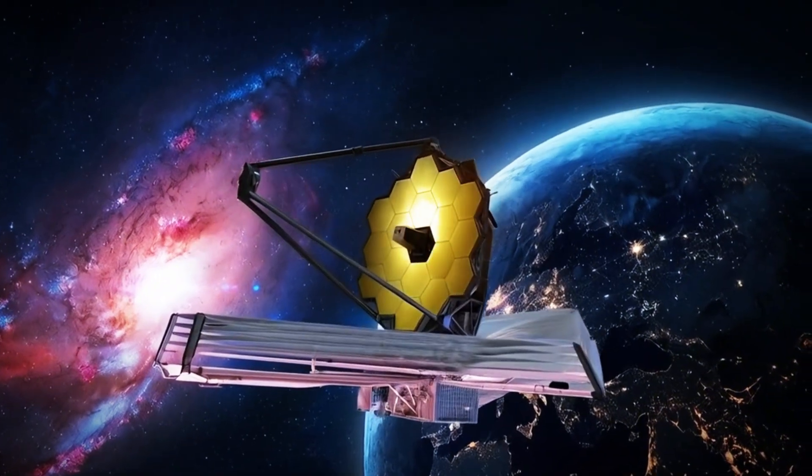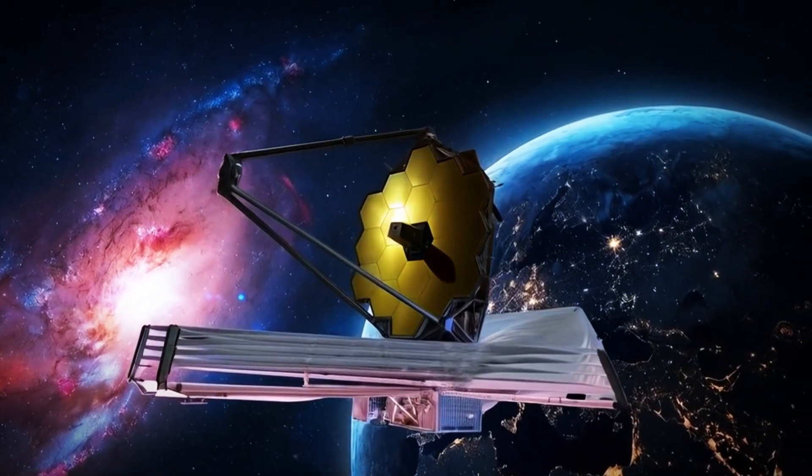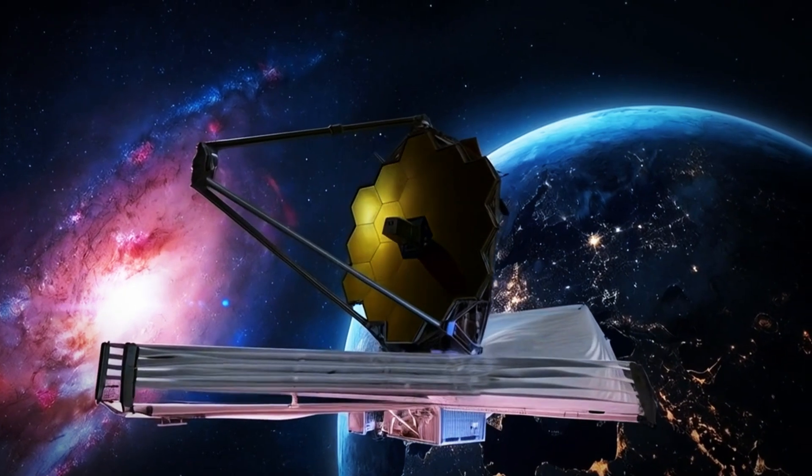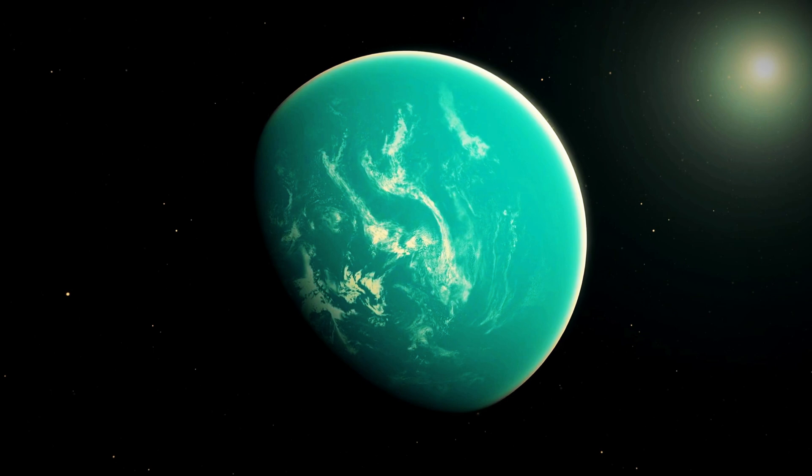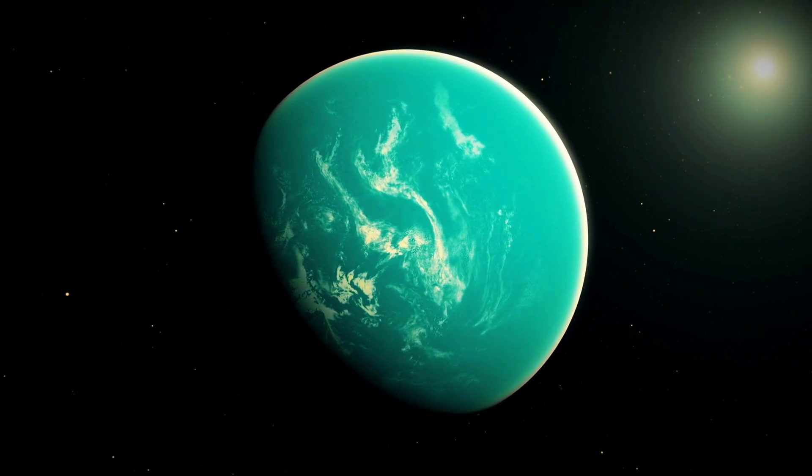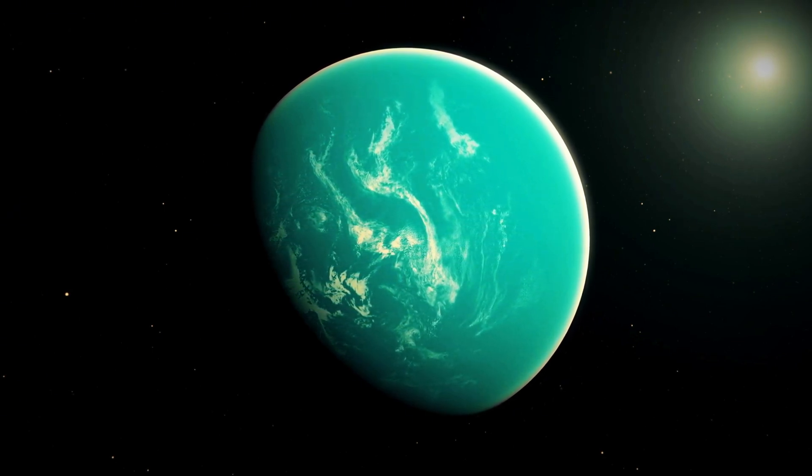The James Webb Telescope revealed the first-ever ultra-clear image of Proxima b. After years of research, astronomers finally detected this exoplanet's slight gravitational pull on its star in 2013.